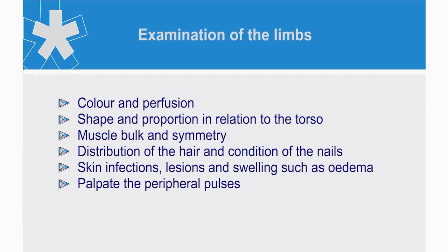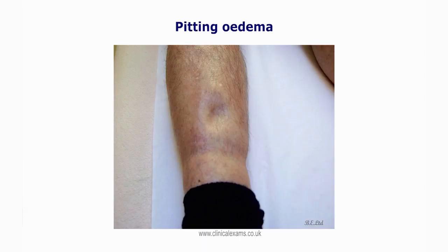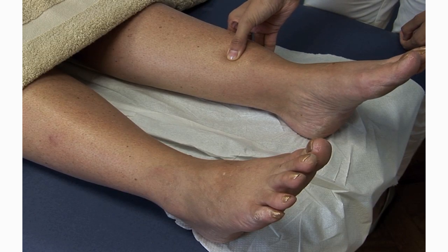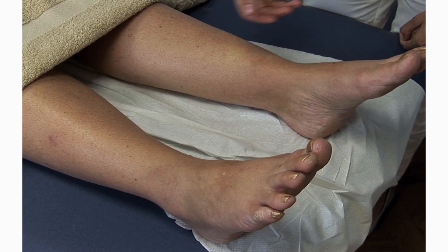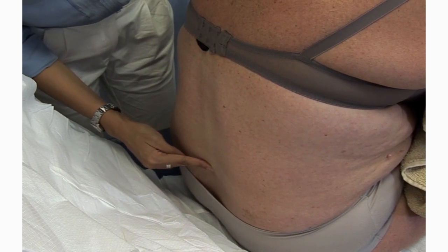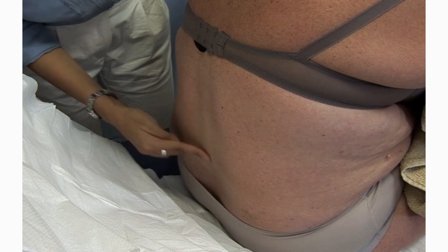If indicated, also palpate the peripheral pulses. Pitting edema is the accumulation of fluid in the intercellular spaces. It can be confirmed by placing firm pressure with your thumb for a few seconds behind the medial malleolus or just above the ankles. When the finger is removed, a depression will remain visible. If a patient is confined to bed, then fluid will accumulate over the sacral region.